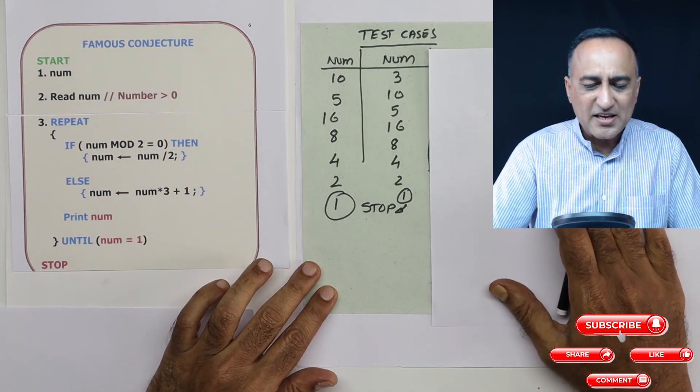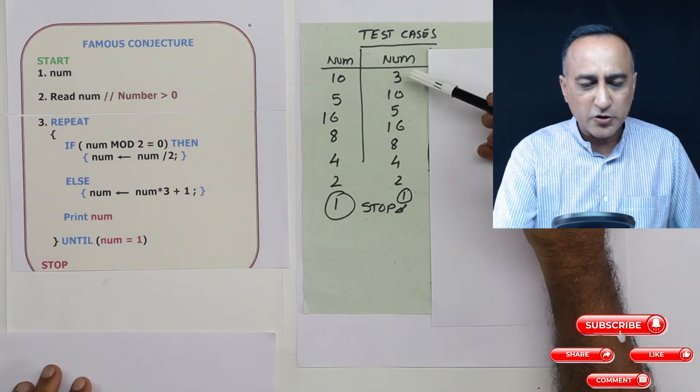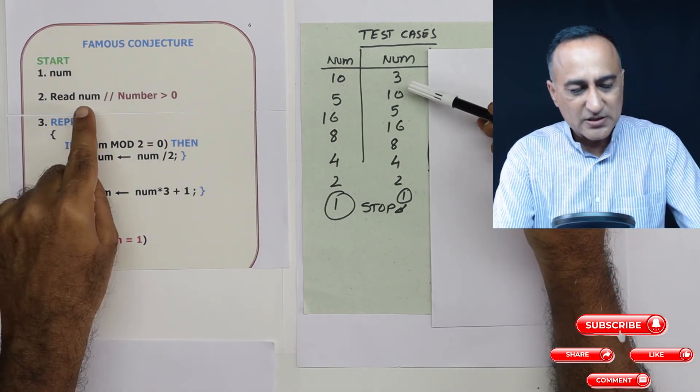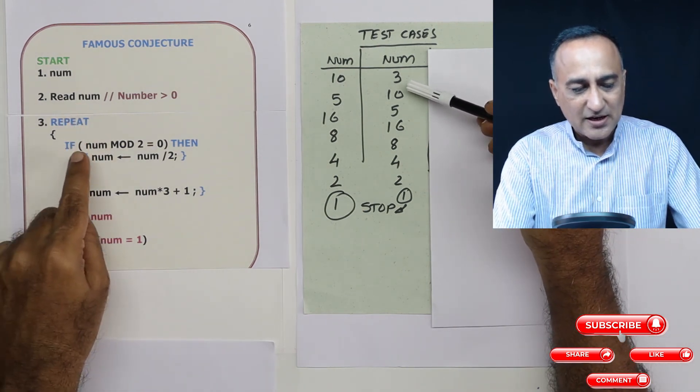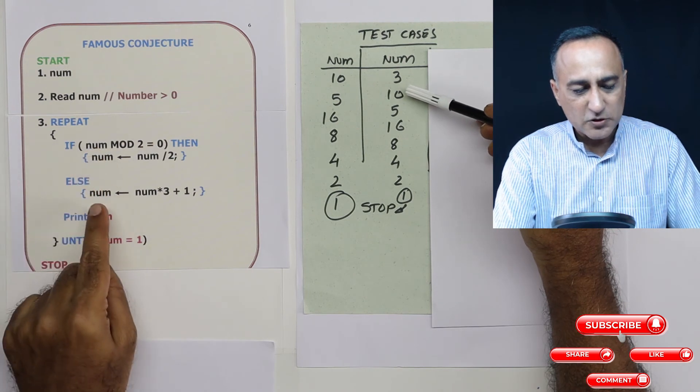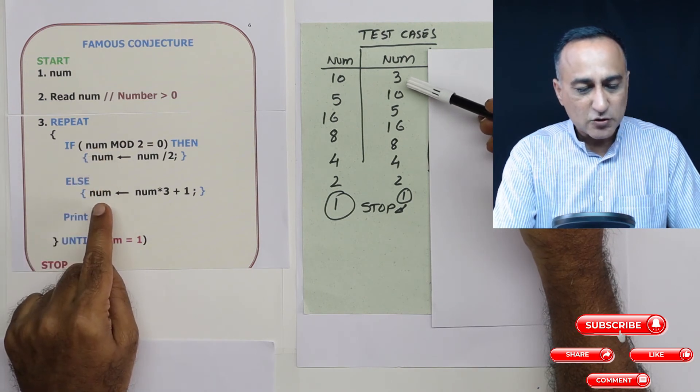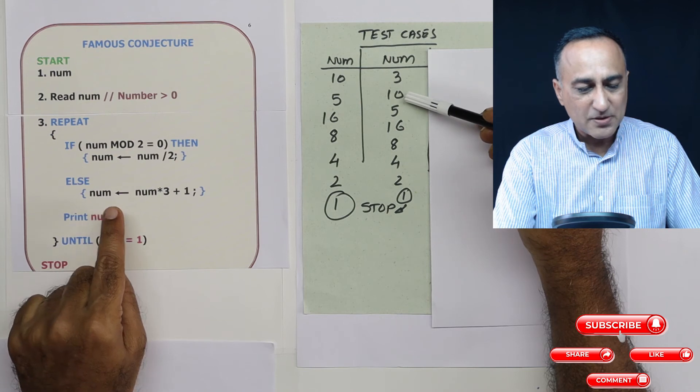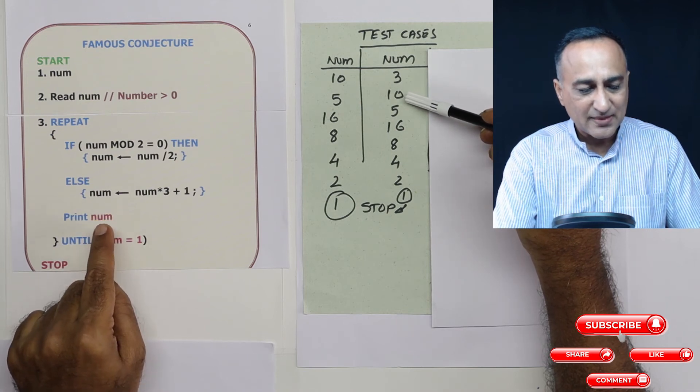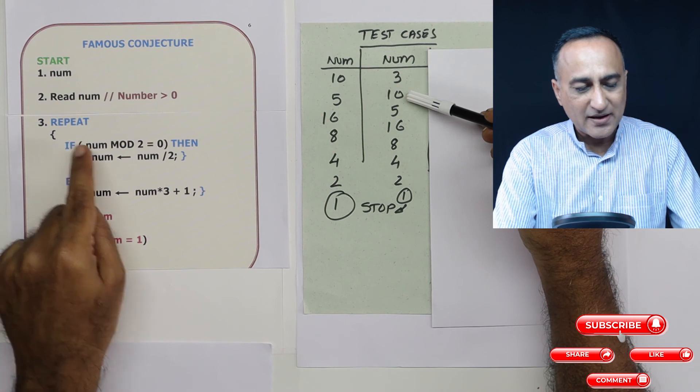So you can try this with any other number. For example, I will show you it with 3. Suppose user enters as 3. Now 3 is an odd number, so it will come here. So 3 into 3 is 9, 9 plus 1, number becomes 10. So I will print 10 first. Then I will go back here.